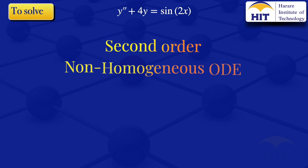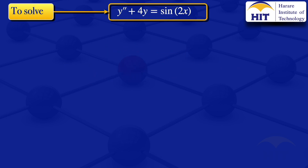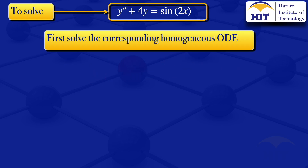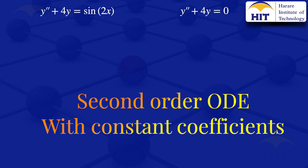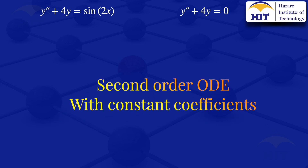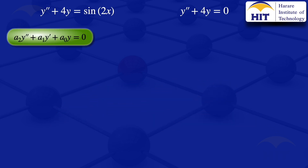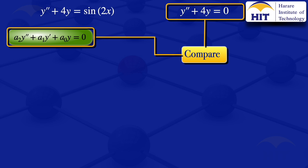To solve this equation, we first have to solve the corresponding homogeneous ODE, which is y prime prime plus 4y equals 0. This is a second order ODE with constant coefficients of the form a2·y'' + a1·y' + a0·y = 0. Comparing the two equations, we see that a2 = 1, a1 = 0, and a0 = 4.